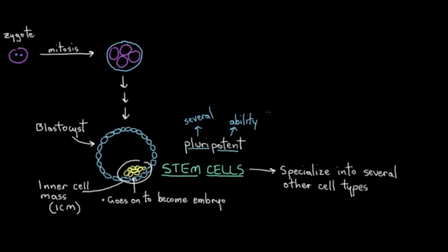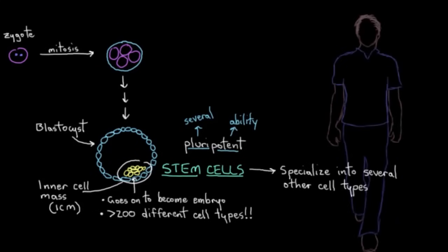So during development, these inner cell mass pluripotent stem cells can differentiate into any of the more than 200 different cell types in the adult human body when given the proper stimulation. So it's kind of incredible to think that every single cell in your body can trace its ancestry back to this little group of stem cells here.